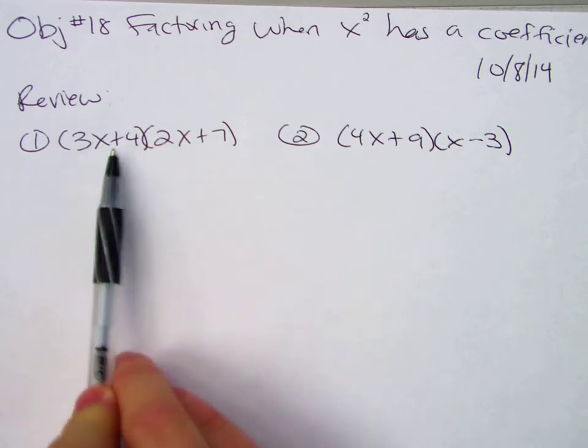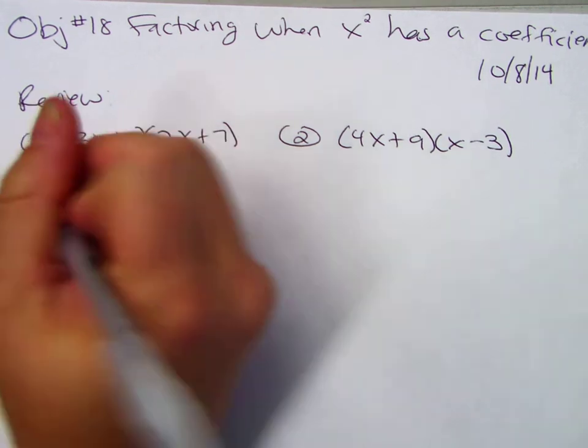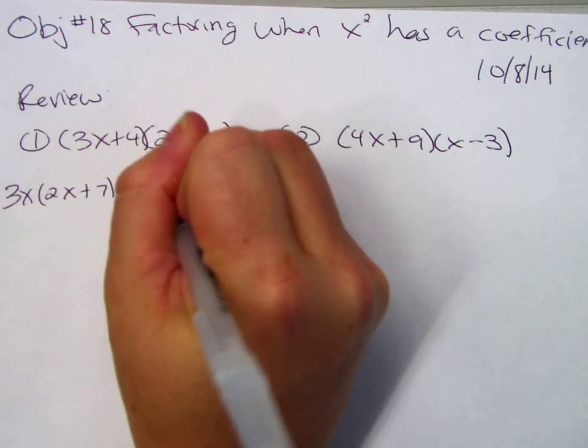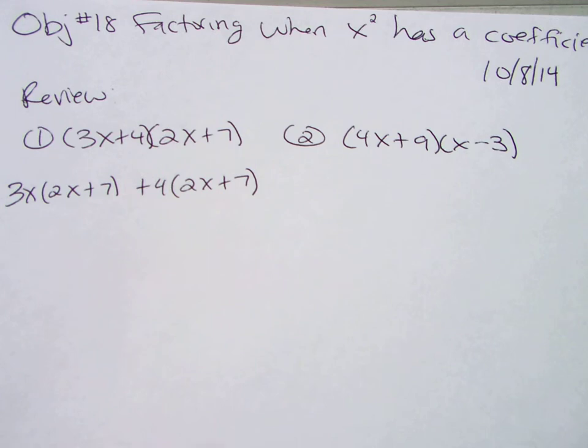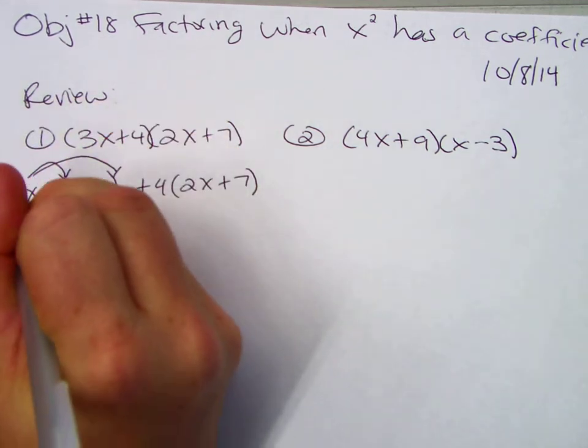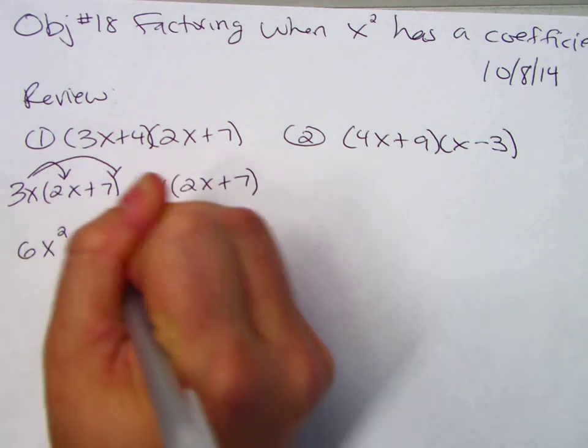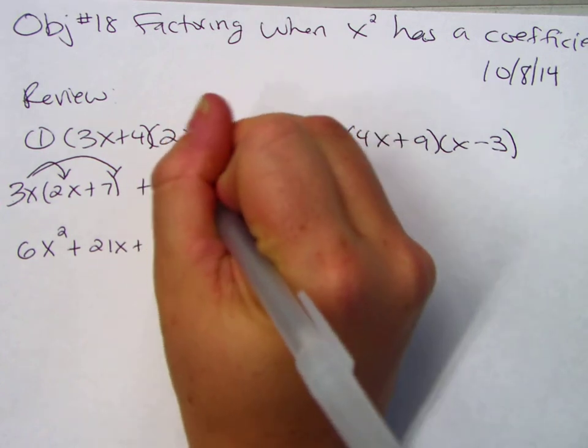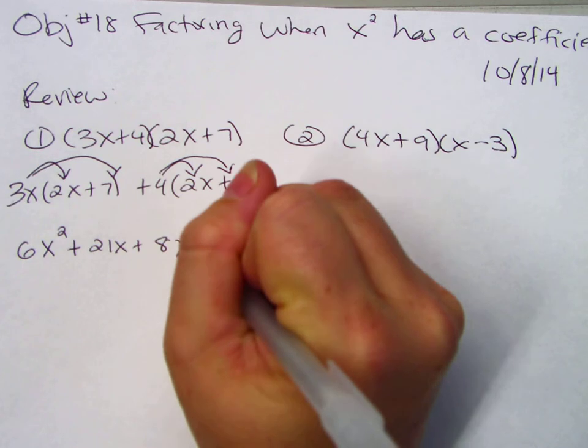It's 2 binomials multiplying, so what do you do? We need 3x to multiply 2x plus 7, and then we also need that 4 to multiply 2x plus 7, and we're double distributing. So 3 times 2 is 6, x times x is x squared. 3x times 7, 21x, and then the second set, 4 times 2x is 8x, and 4 times 7 is 28.